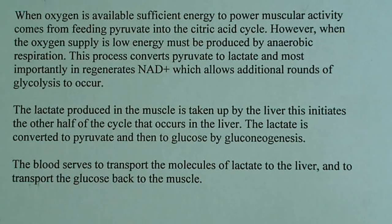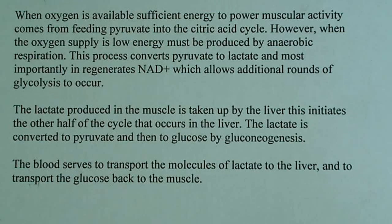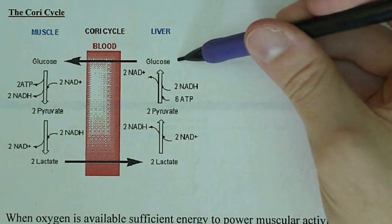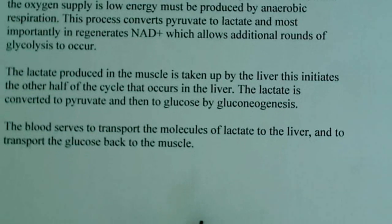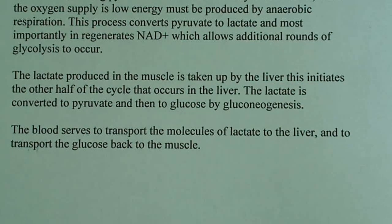So the lactate produced in the muscle is taken up by the liver. And this initiates the other half of the cycle that occurs in the liver. The gluconeogenesis portion of it is taking place in the liver. This part's taking place in the liver. The conversion of lactate to pyruvate, that's also taking place in the liver. So this initiates the part in the second half of the reaction in the liver, and lactate's converted to pyruvate, and then to glucose by gluconeogenesis. And just for clarity, the blood serves as a transport vessel. It's the way in which the glucose is transported back to the muscle once it's made in the liver, and the way lactate is transferred to the liver. It's through the blood.